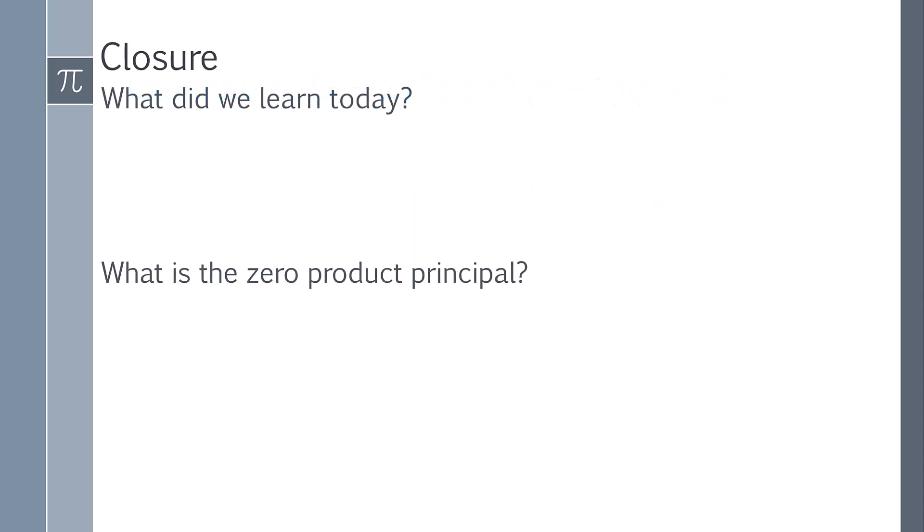So to conclude today's lesson, we learned how to solve quadratic equations using the zero product principle. And what is the zero product principle? It's saying that if you have two factors being multiplied and that equals 0, you can assume that either the first factor is 0, the second factor is 0, or you can assume both are 0.